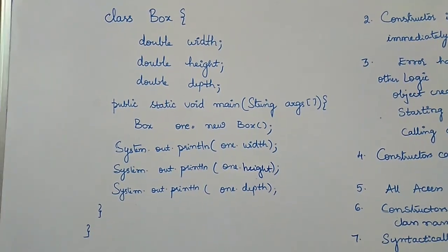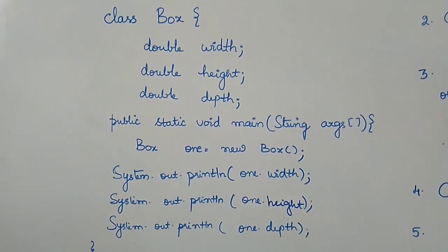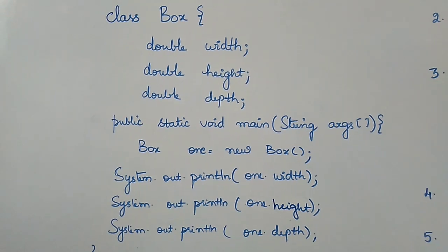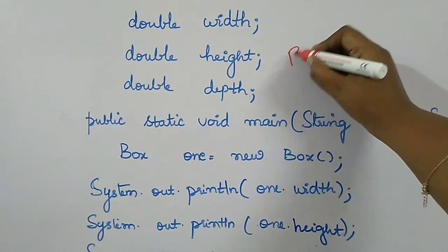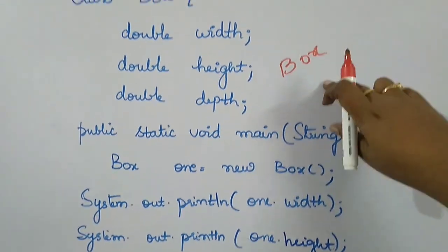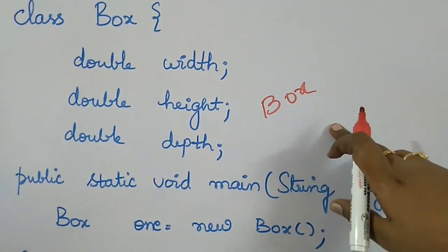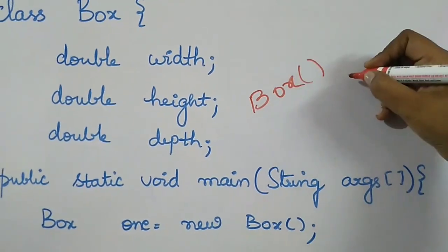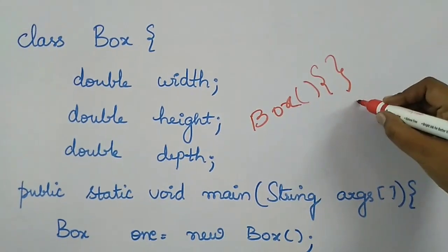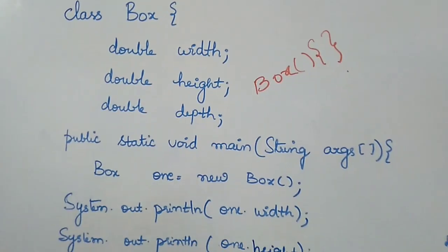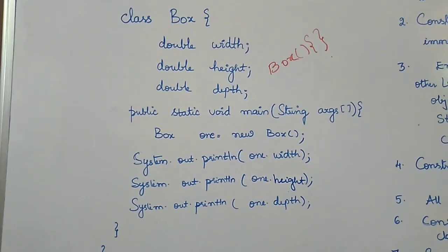Pause the video and guess the output. Since we are not mentioning any constructor, the compiler will add one. The constructor will have the same name as the class — 'Box' — with parentheses, an open bracket and a close bracket. This is the default constructor the compiler will add into the program.